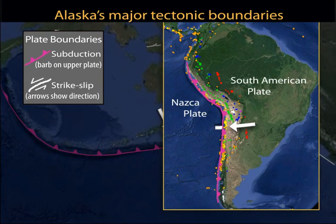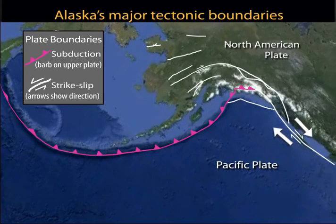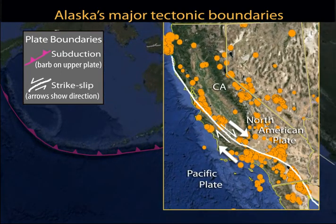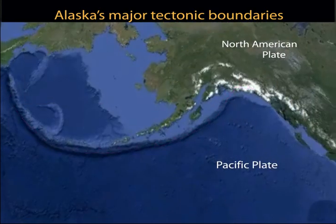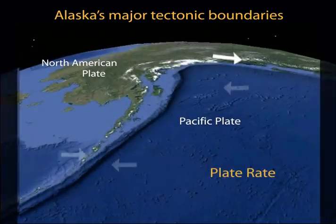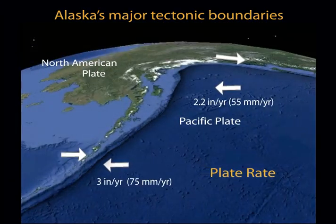Along southeast Alaska and western British Columbia, the Pacific Plate grinds against the North American plate in a strike-slip motion, as it does along the San Andreas Fault in California. The rate of subduction varies from 2.2 to 3 inches per year.